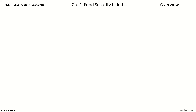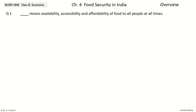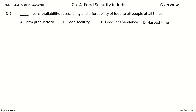This comprises 17 questions. Question 1: Dash means availability, accessibility and affordability of food to all people at all times. The options are Farm Productivity, Food Security, Food Independence, Harvest Time. Your time to choose. And the answer is Food Security.